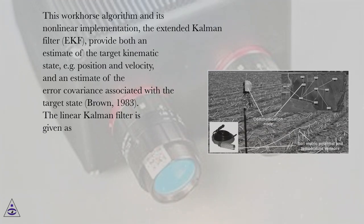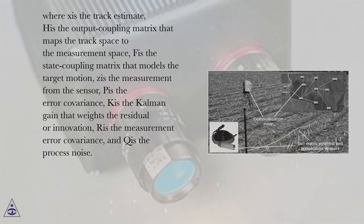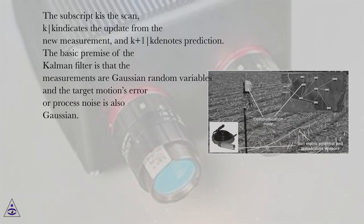The linear Kalman filter is given as, where x̂ is the track estimate, H is the output coupling matrix that maps the track space to the measurement space, Φ is the state coupling matrix that models the target motion, z is the measurement from the sensor, P is the error covariance, K is the Kalman gain that weights the residual or innovation, R is the measurement error covariance, and Q is the process noise. The subscript k is the scan, k|k indicates the update from the new measurement, and k+1|k denotes prediction.